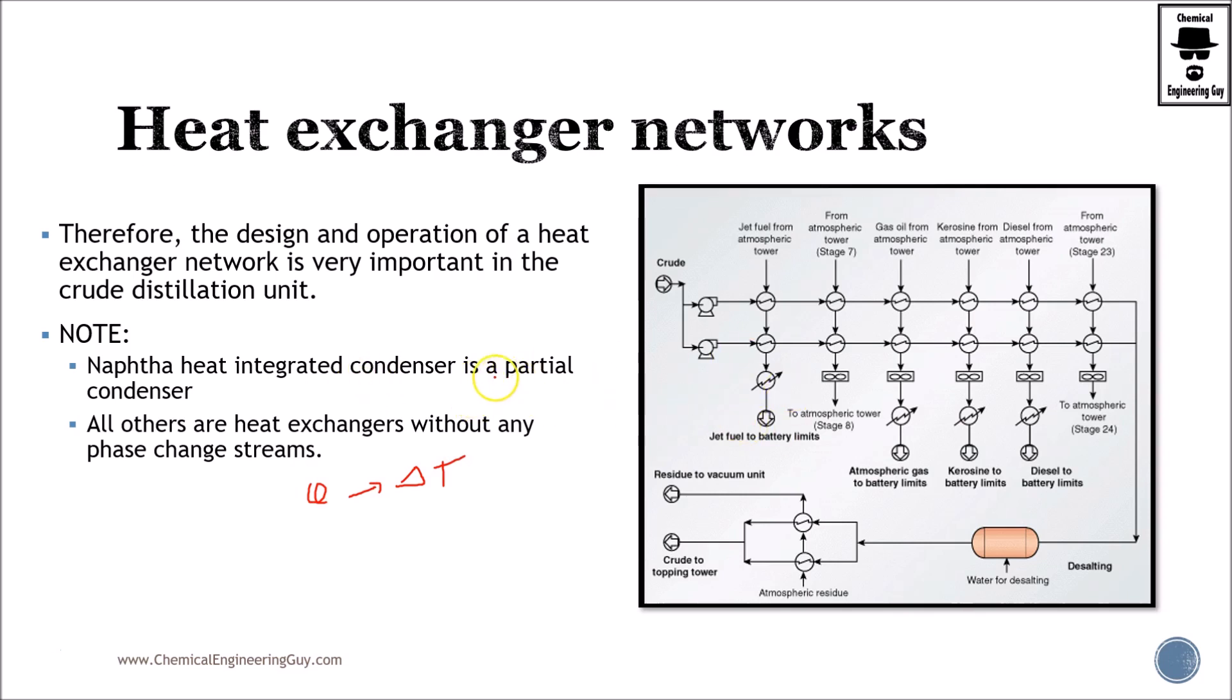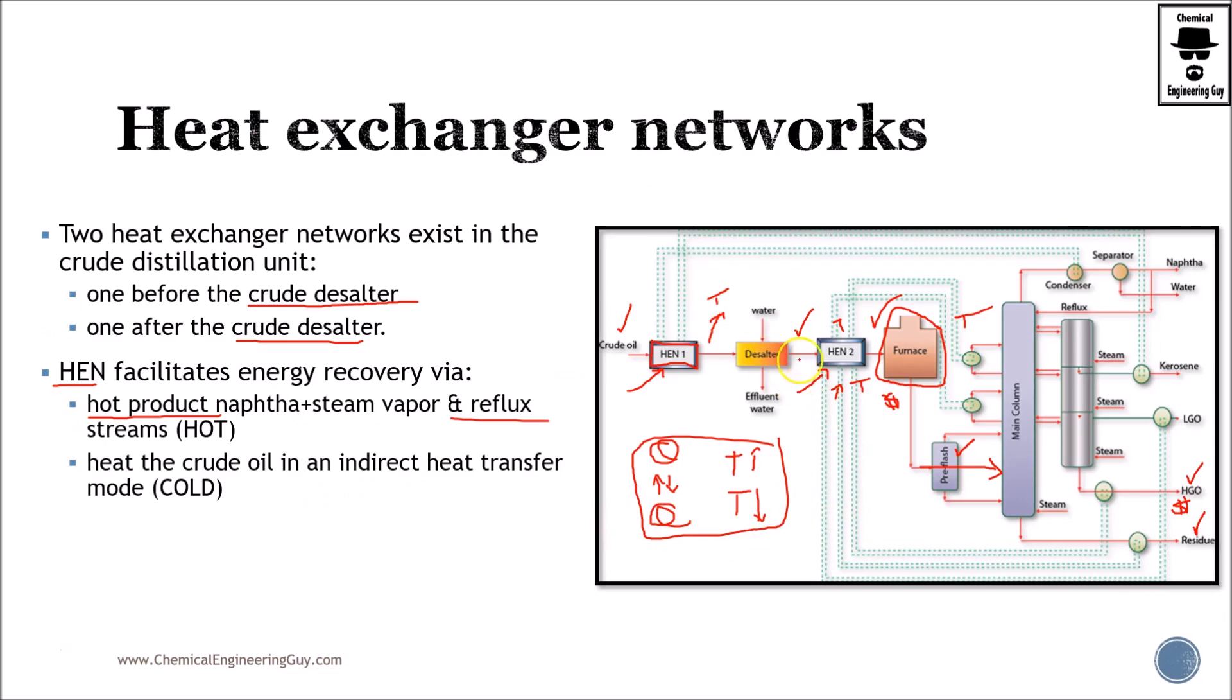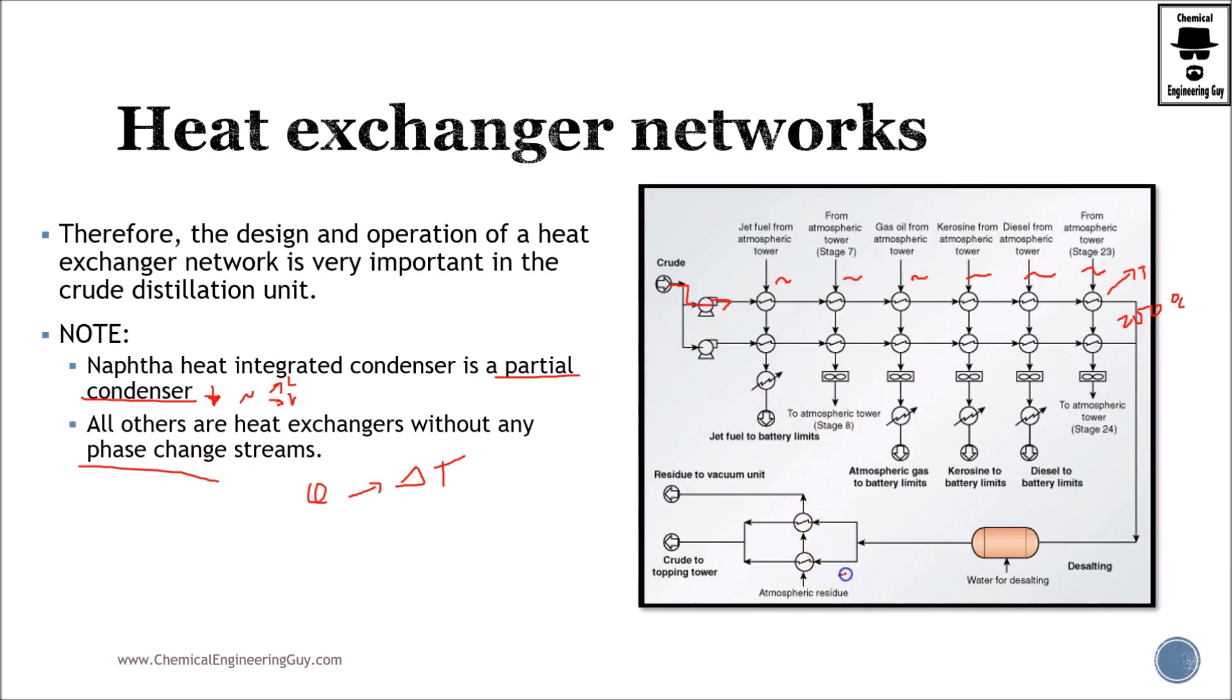Note that naphtha is a partial condenser, so you'll have naphtha as both vapor and liquid, but all others are without phase change. The crude is treated first with jet fuel—a middle distillate—then with heavier distillates. The temperature is around 250°C at the first network, then after desalting, the second heat exchanger brings it to around 290°C. Finally, the crude oil goes to the furnace, which brings it to 350°C before entering the distillation column.